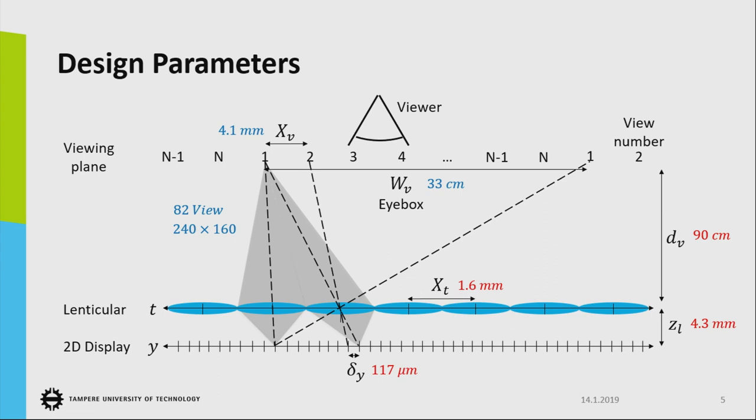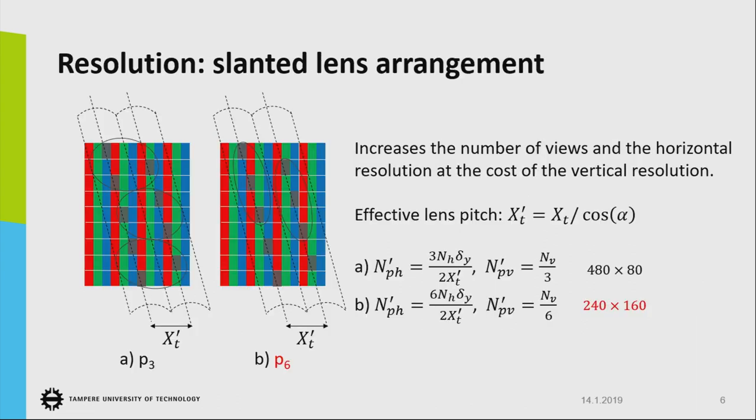Each view has the resolution of 240 by 160. This resolution is based on the slanted lens arrangement, well-known slanted lens arrangement. If you use lenticular sheet without any slanted arrangement, you don't lose any pixels in the vertical direction, but in the horizontal direction you divide your pixels between the angles and the spatial samples. So the spatial resolution at the horizontal dimension will be very low. That's why we have to use this slanted arrangement.